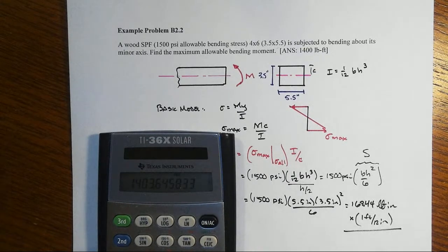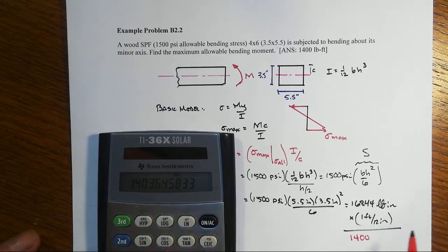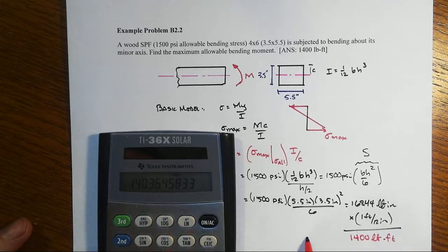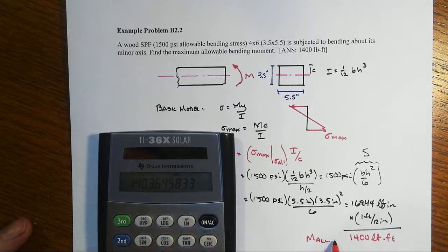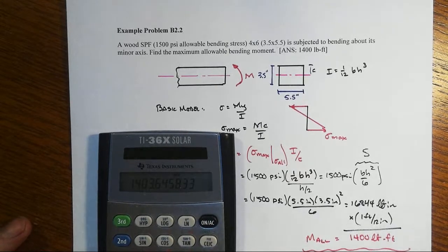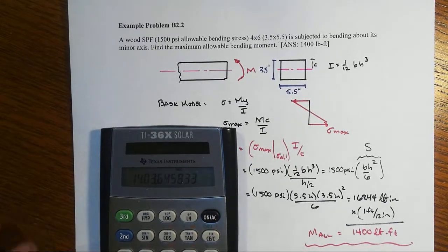1403.6, I would not report it to that precision, especially with wood. The allowable bending moment is 1400 pound-foot.